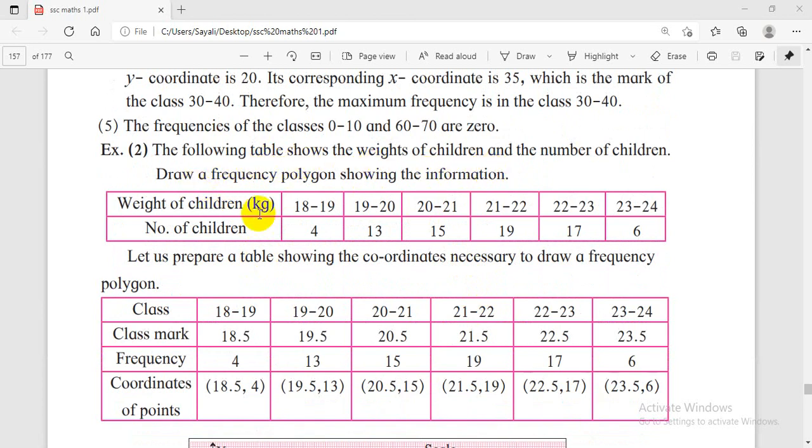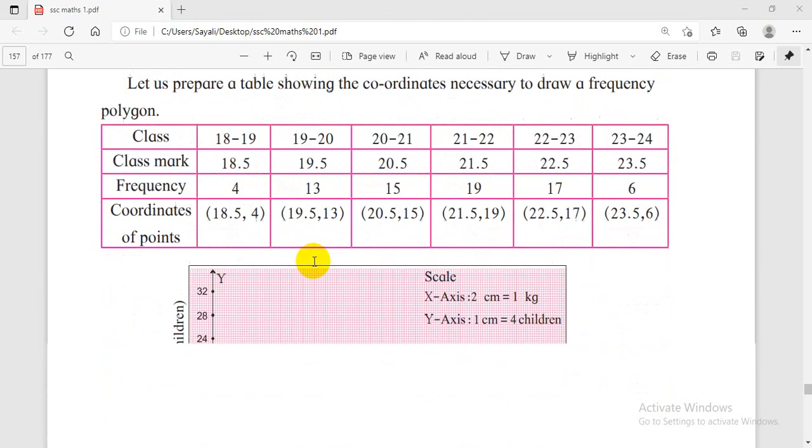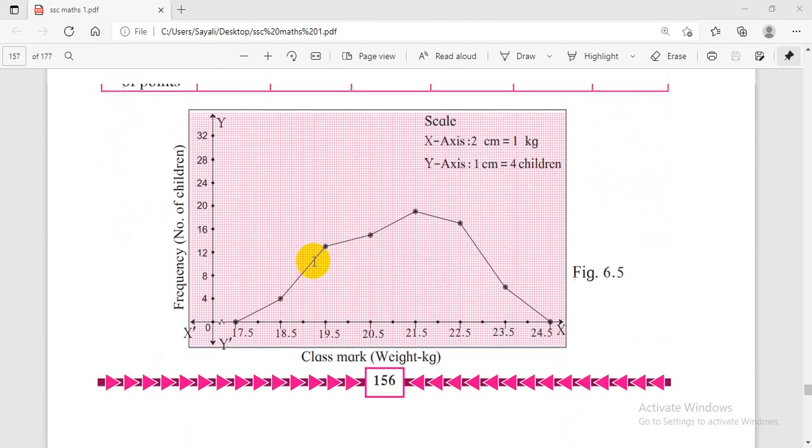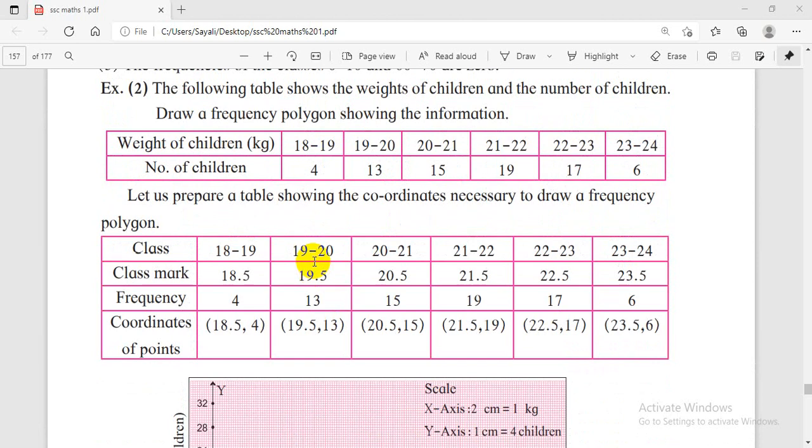The following table shows the weights of children and the number of children. The weights are 18 to 19 kg, 19 to 20 kg, 20 to 21 kg, 21 to 22 kg, 22 to 23 kg, with corresponding frequencies. Draw the frequency polygon showing this information.